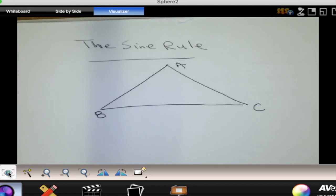But in this diagram we do not have a right angle. So if we want sine of angle B or A or C, we can't say opposite over hypotenuse because there is no hypotenuse since there is no right angle.